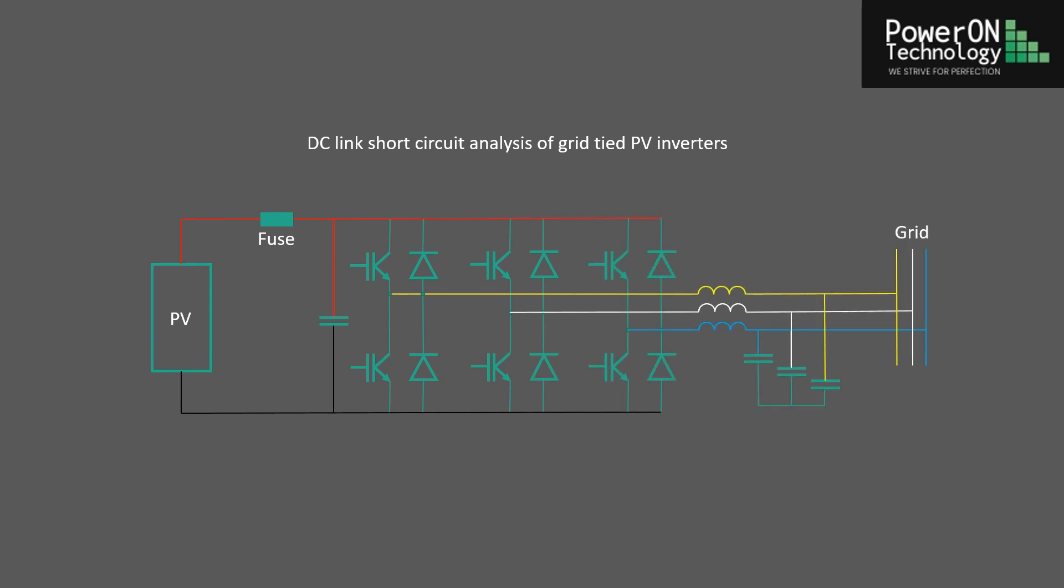This is what a typical grid-tied inverter installation looks like. The PV panel array feeds into a three-phase inverter. At the input to the inverter is a capacitor bank to filter out the three-phase current ripple. This is followed by the six IGBTs with their freewheel diodes and the output filter with inductors and capacitors. The output is connected to the three-phase grid.